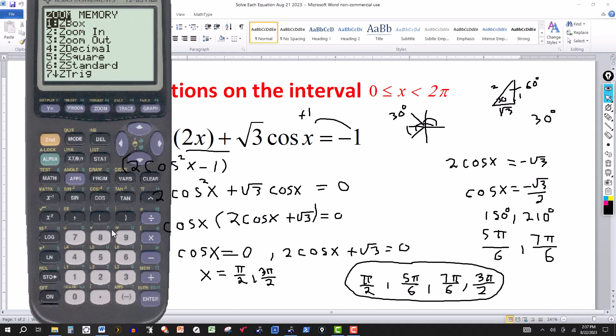Cosine of 2x plus the square root of 3 cosine of x plus 1. I'm doing a zoom here. I'm going to use feature number 7, z-trig. That's what I hit there. And there's the graph. And this works best when you have it in degrees.